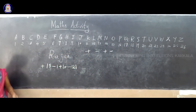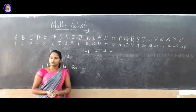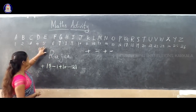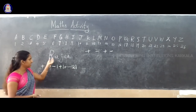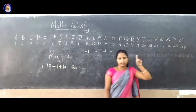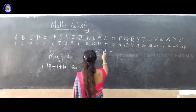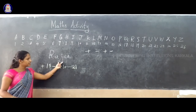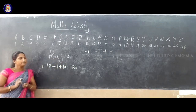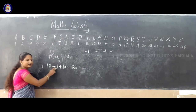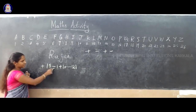Understood? This is one activity — you can do this. You can take any name. Write the alphabets and numbers. R means 18, A means 1, J is 10, U is 21. The rule is plus, minus, plus, minus. So now, we solve. Plus 18 and minus 1. Here the sign is different.